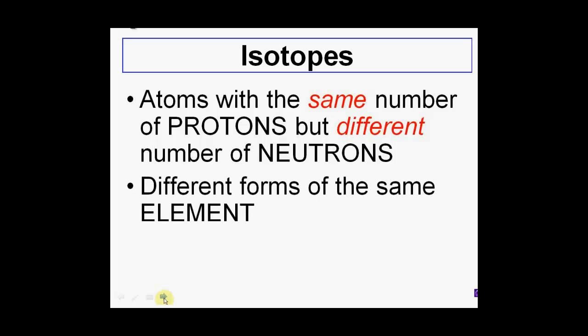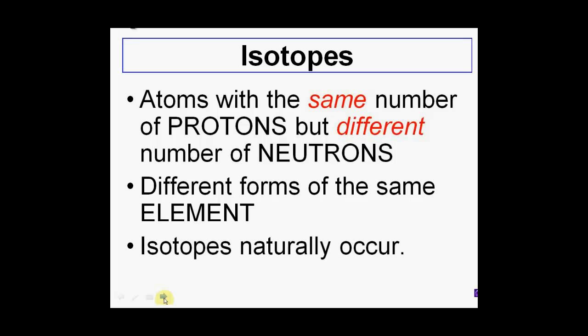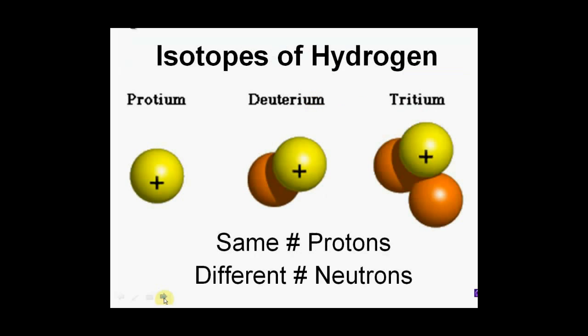I also call isotopes different forms of the same element, and these actually occur naturally. It occurs in nature that there are several different forms of one element. Although the periodic table only gives one box for an element, there can be several different forms located within that one box. Here's a good example: hydrogen.